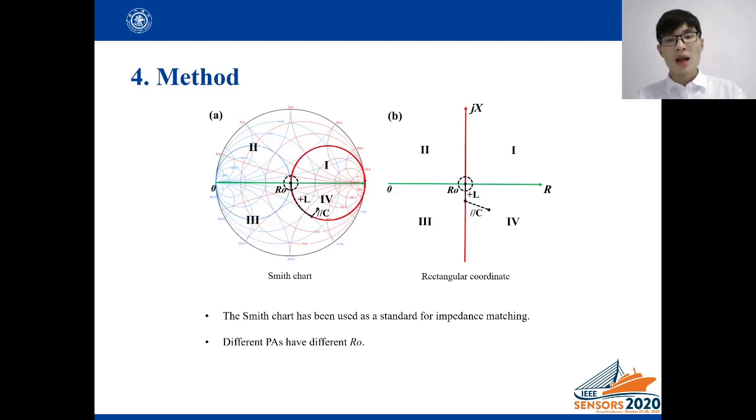The Smith charts have been used as a standard for impedance matching. In figure A, the red circle and green line divided the Smith chart into four regions. RO is the center of the Smith chart and the final matching point.